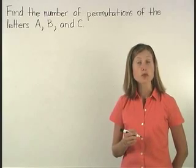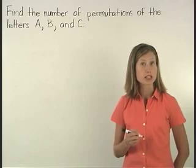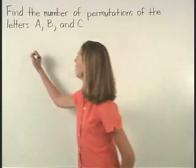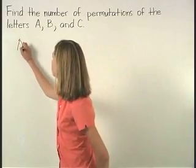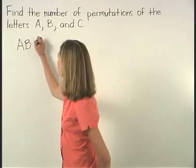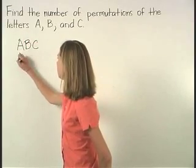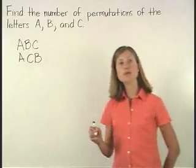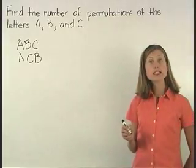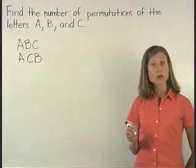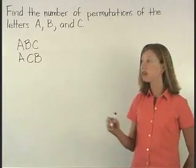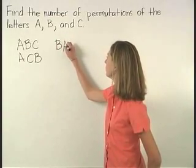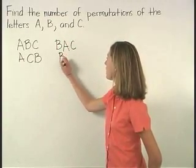Let's start with the permutations that begin with the letter A. So we have ABC and ACB. Next, let's list the permutations that begin with B. We have BAC and BCA.